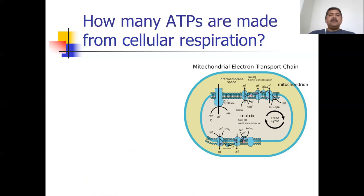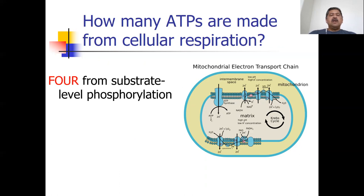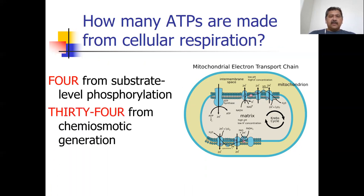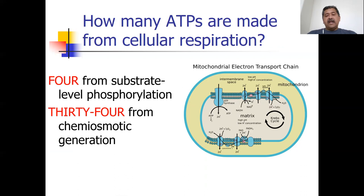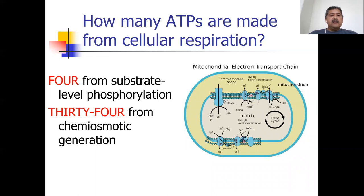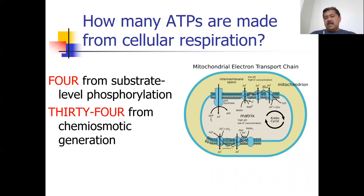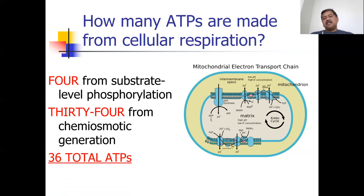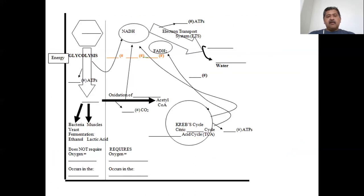So how many ATPs are made from cellular respiration? Four from substrate level phosphorylation, and 34 from chemiosmotic generation — not just 30, because there's another high-energy electron acceptor called FADH2 introduced in the Krebs cycle. Four plus 34 gives 38, but it costs two ATPs to transport some of those NADHs from the cytoplasm to the mitochondria.